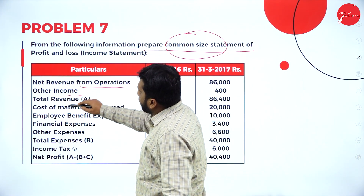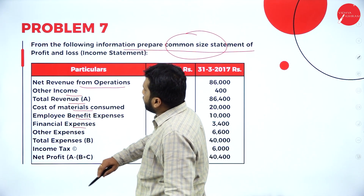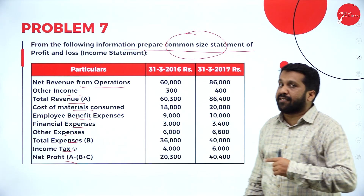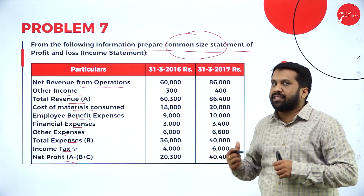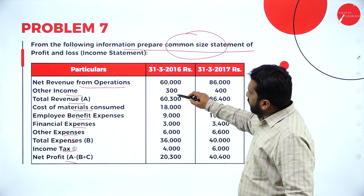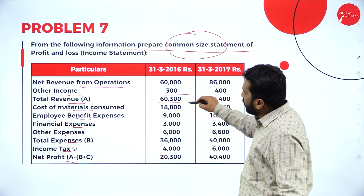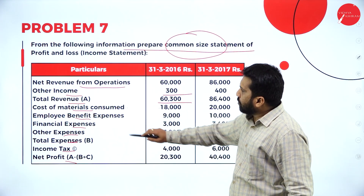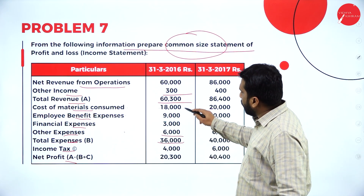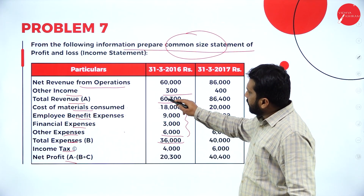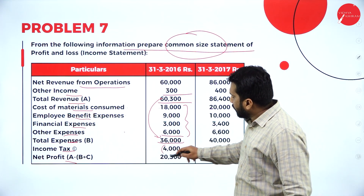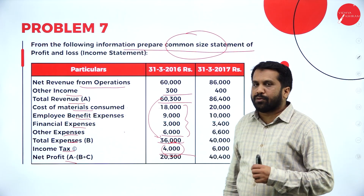Revenue from operations, other income, total revenue, cost of material, employee benefit, finance expenses, other expenses, total expenses, income tax, and net profit — these are the information given. Now come out from balance sheet — we are not doing balance sheet, we are doing an income statement. Net revenue plus other income gives the total income. Minus cost of material consumed, employee benefit, financial expenses, and other expenses — if you subtract all this from total, you will get profit before taxation. Then minus income tax, you will get your net profit.